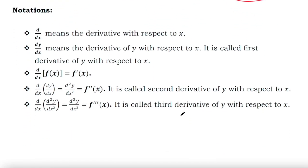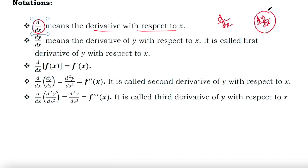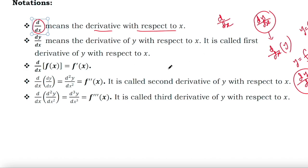Now let us understand some notations we will use in this chapter. The first one is d/dx, which means derivative with respect to x — it is a differential operator. So dy/dx means the derivative of y with respect to x, which you can also write as d/dx of y. This applies when y is a function of x. But when y is a function of t, then you need to calculate dy/dt instead.